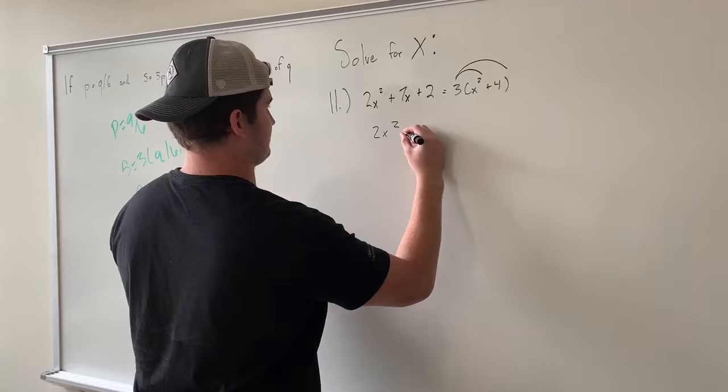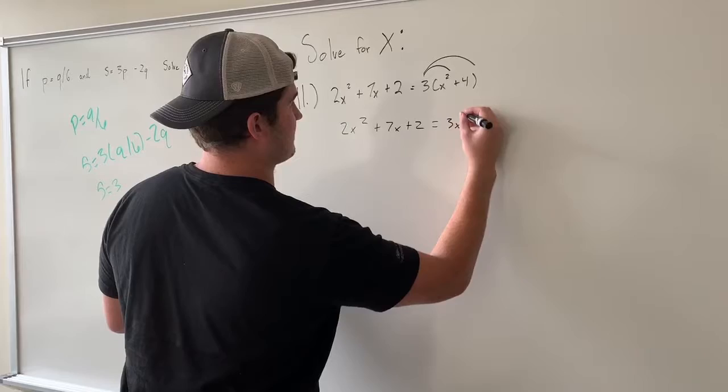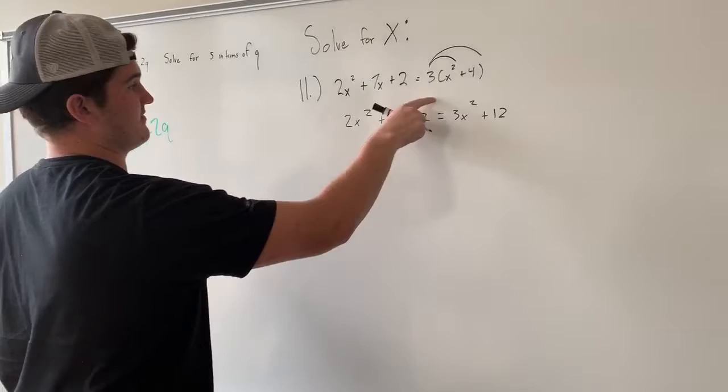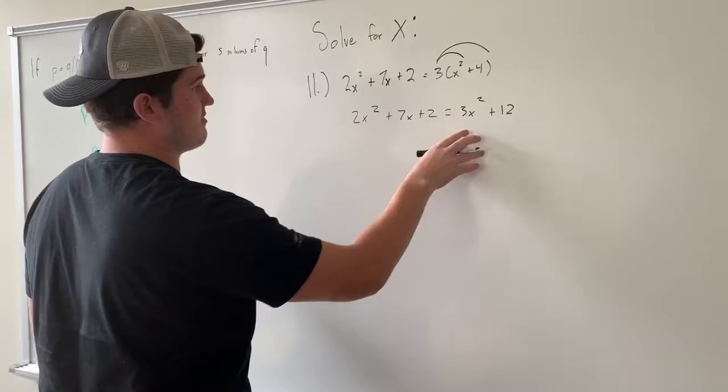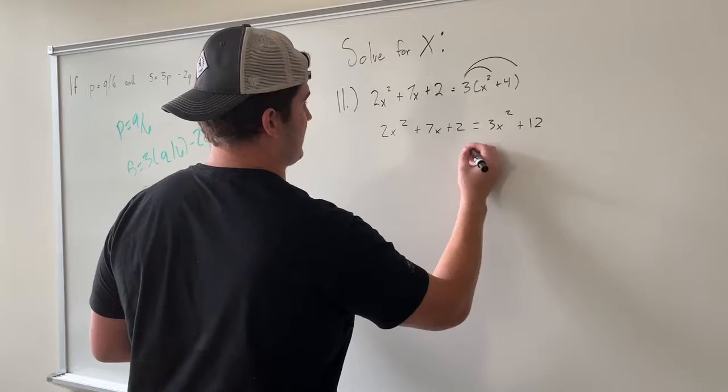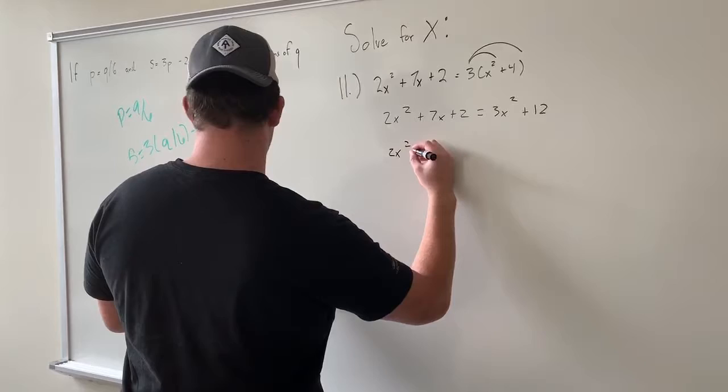3x, 12. Alright, so after we simplify it as much as we can, we're going to want to make this equal to zero. So what we're going to do is we're going to subtract 3x squared plus 12, so let's subtract that from this, so it's going to come out.